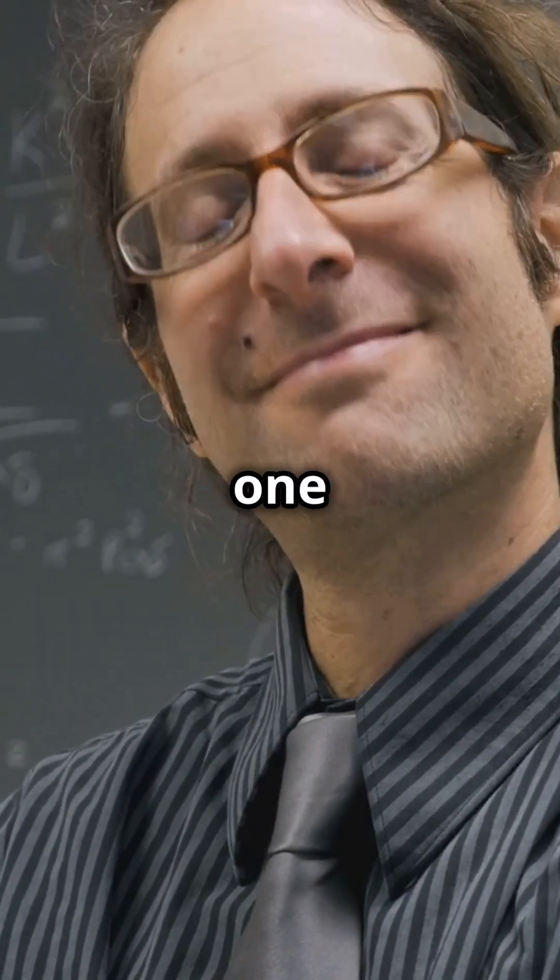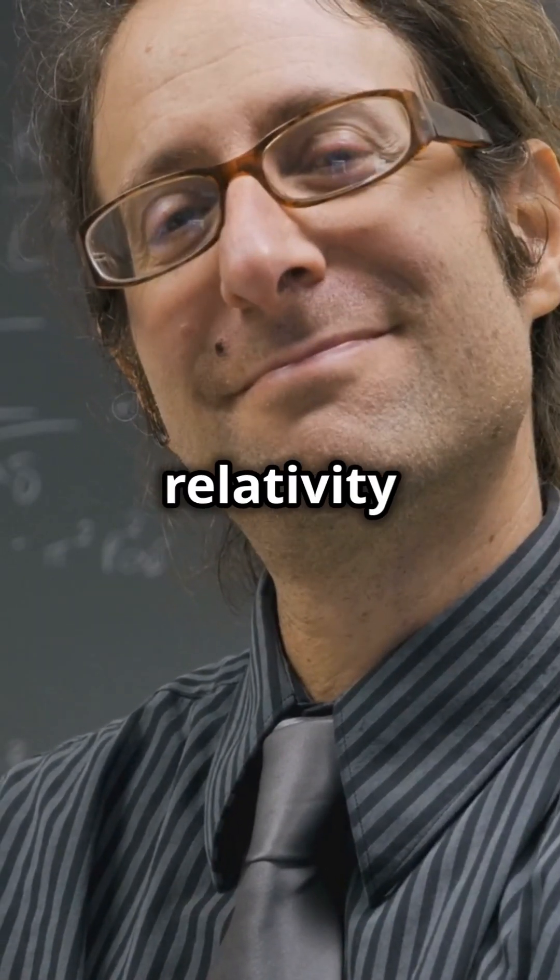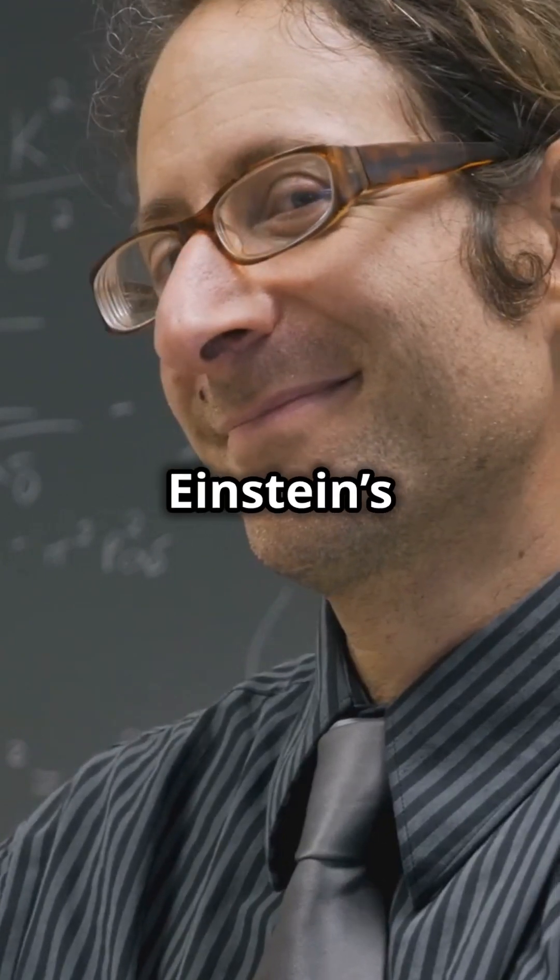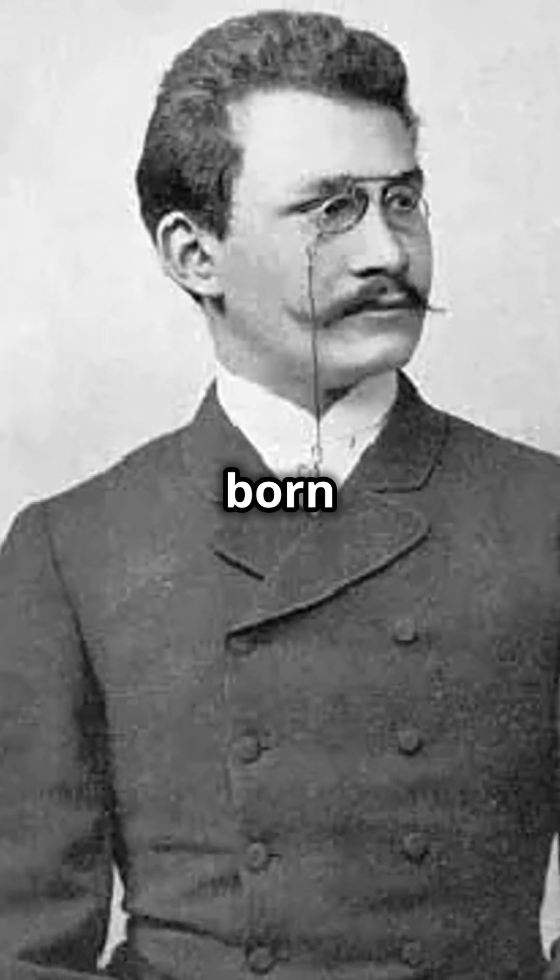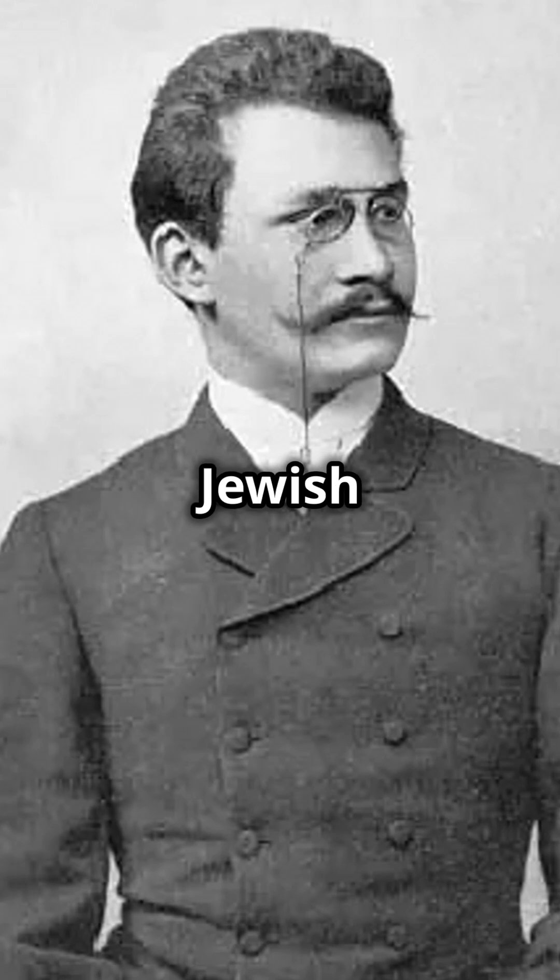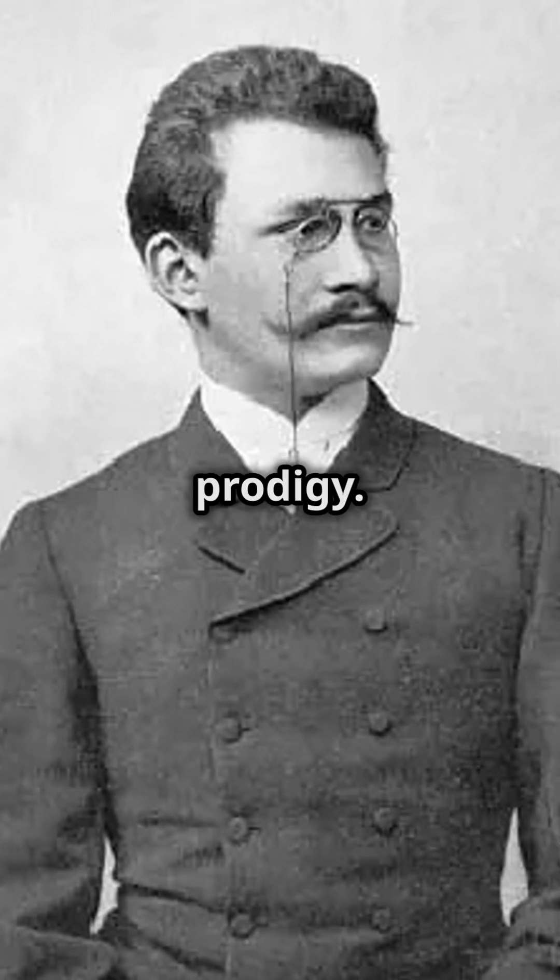Few people realize that one of the key figures behind special relativity was also Albert Einstein's former professor. Hermann Minkowski, born in 1864 in Russia to a Jewish merchant family, was a mathematical prodigy.